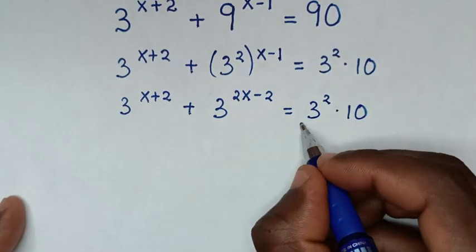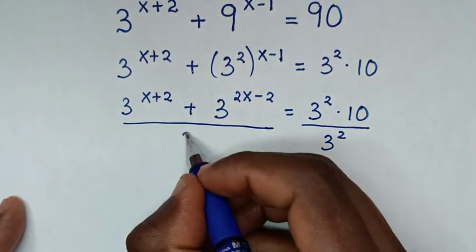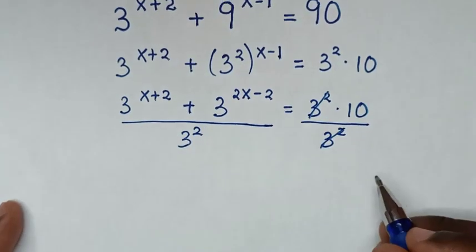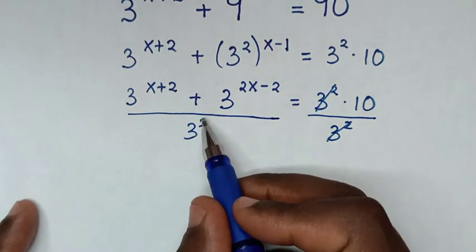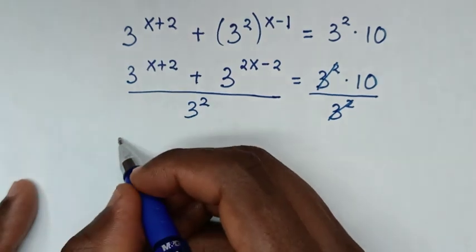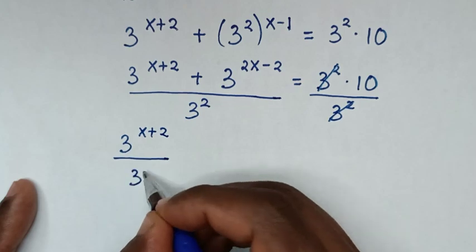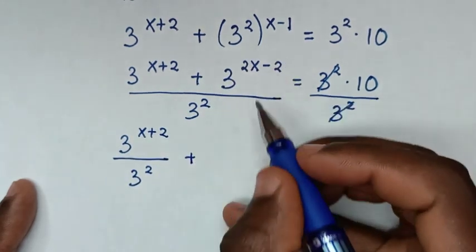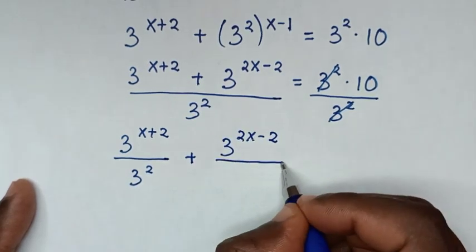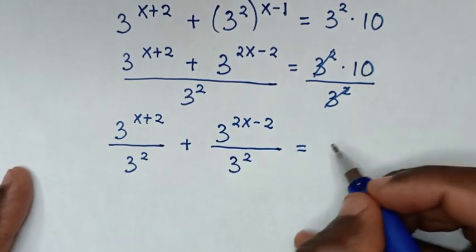Then in the next step, we divide by 3 squared on both sides. This 3 squared will cancel this 3 squared. So it will be 3 power of x plus 2 over 3 squared, plus 3 power of 2x minus 2 over 3 squared, is equal to 10.